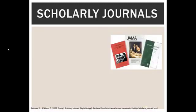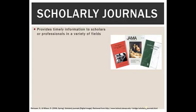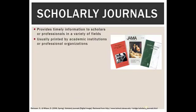Most of the time when you're doing research in college, your professors are going to expect you to use peer-reviewed articles, which are normally found in scholarly journals. Scholarly journals provide timely information to scholars or professionals in a variety of fields. They're written for scholars by scholars, use the language common to that field, and are done at a very high level. They're usually printed by academic institutions or professional organizations and are mostly peer-reviewed, which is very important for ensuring quality. It's not a guarantee, but it is a step toward finding something vastly more trustworthy than a blog post.